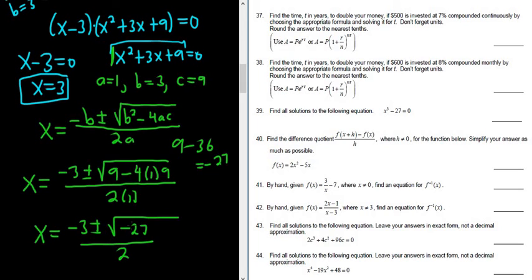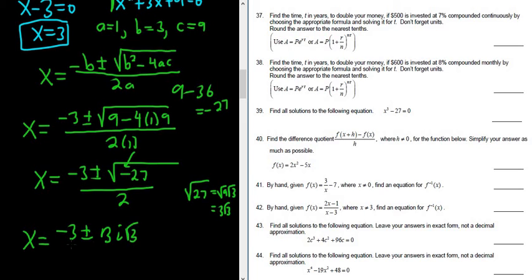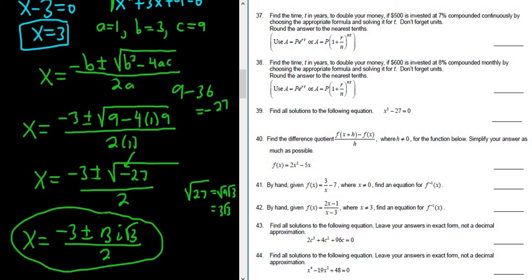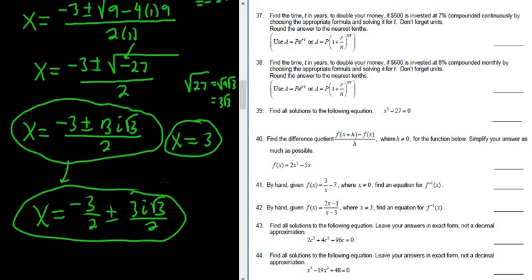So x equals negative 3 plus or minus the square root of negative 27, over 2. To simplify the square root of 27, the largest perfect square factor of 27 is 9, since 27 equals 9 times 3. So the square root of 27 is 3 root 3, and the negative inside the square root gives us an i. So this becomes 3i root 3 over 2. The two complex answers are negative 3 plus or minus 3i root 3, all over 2. You can also write this as negative 3 over 2 plus or minus 3i square root of 3 over 2 — it's a personal choice.